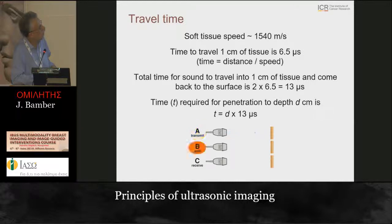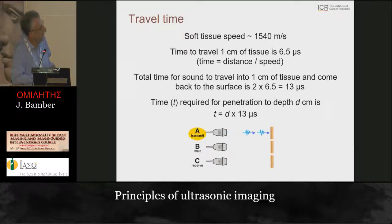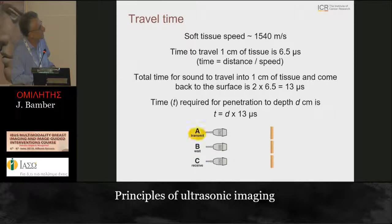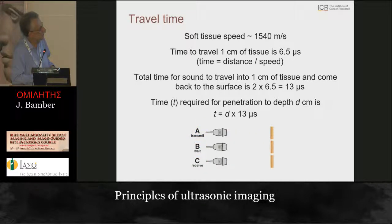When the echo comes back from the deepest region, you can send out another pulse for the adjacent image line. If you don't wait that full travel time, there will be confusion over where the echoes came from. The speed of sound in most tissues is approximately 1540 meters per second, and for one centimeter depth it takes 6.5 microseconds to travel; we must wait for the round trip, so that's 13 microseconds per centimeter depth.